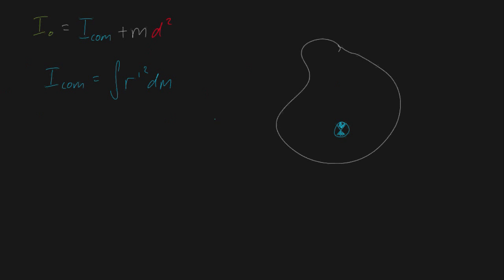In case you haven't watched the video I've done on this — r-dash is just going to be the distance from your center of mass towards your element of mass dm that makes up your object. So this is going to be r-dash just here. Now in order to quantify this into x and y terms, let's draw the axes. So this will be x-dash, and this will be y-dash.